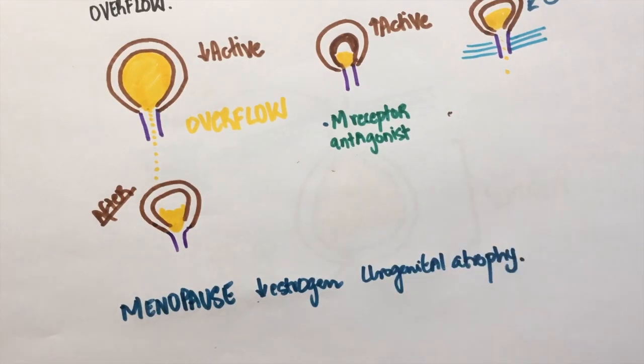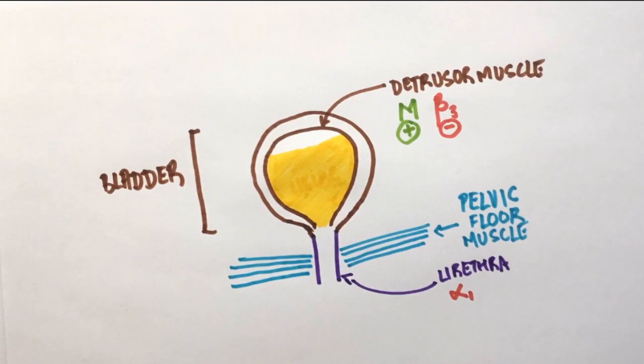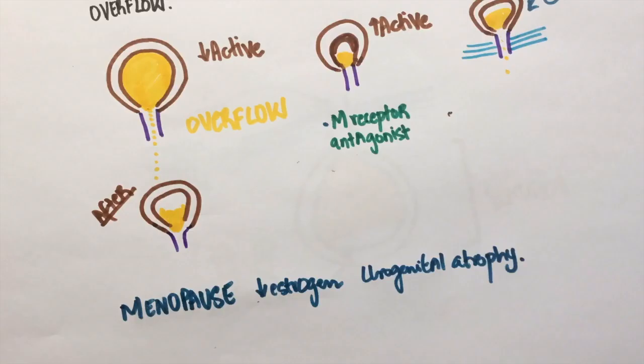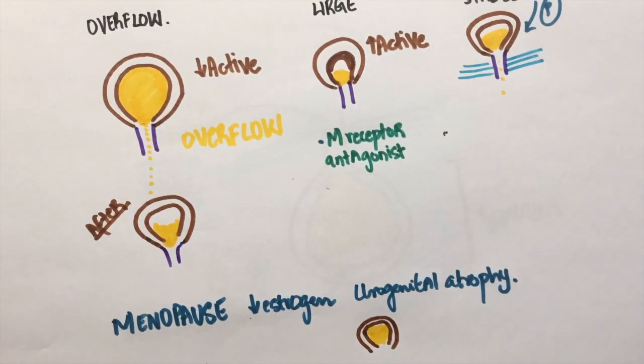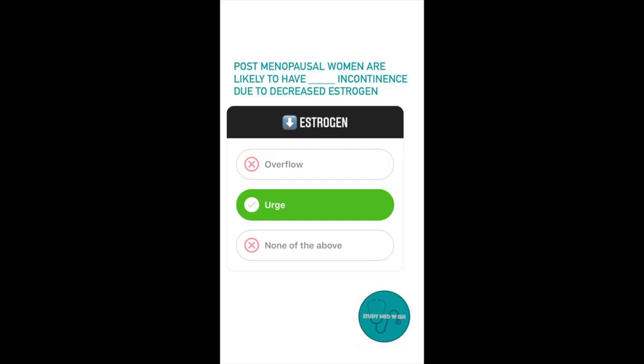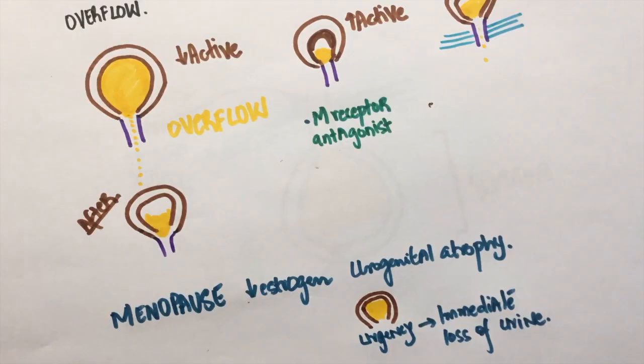I like to think of it this way: when the bladder is like this, it can store a lot of urine. But when there is atrophy, the sensation of getting filled will occur more often, hence leading to increased urge to urinate. In postmenopausal women, urgency is followed by immediate loss of urine.